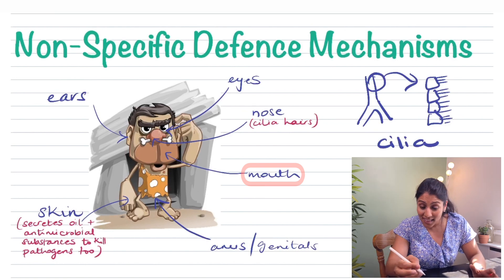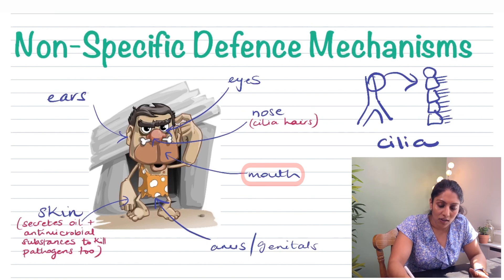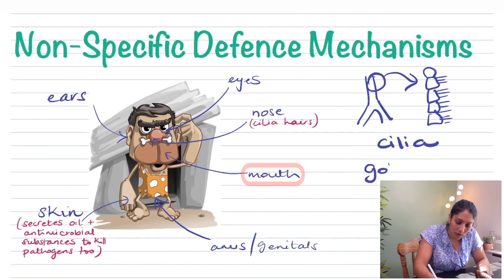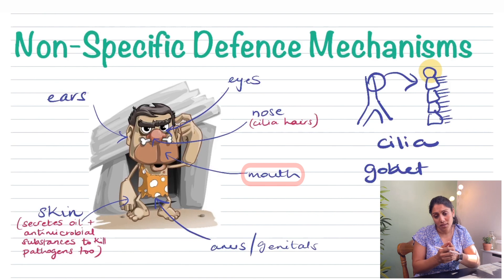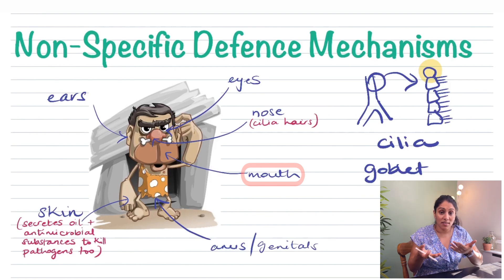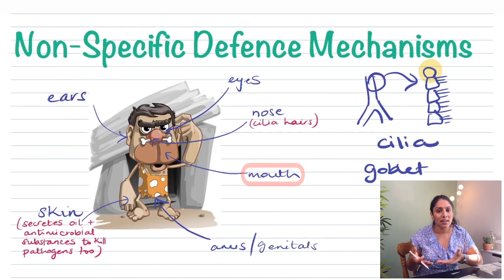In between the cilia cells in your trachea, you also have goblet cells. Goblet cells release mucus, and that mucus traps bacteria or pathogens. This allows the cilia — the hair-like projections on the ciliated epithelial cells — to brush the trapped pathogens upward.